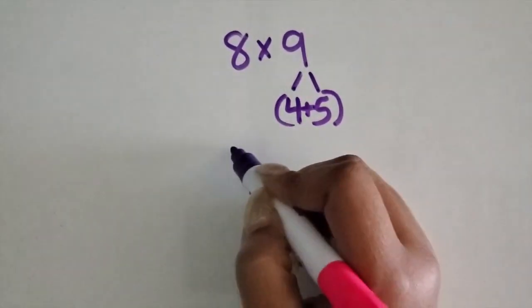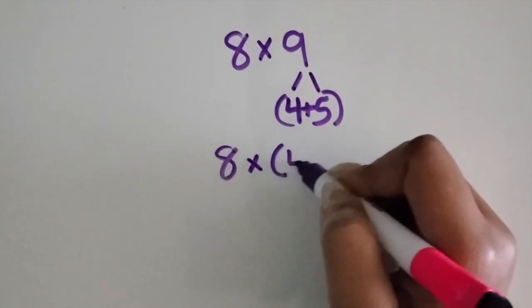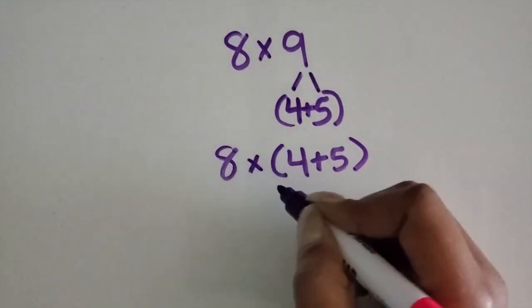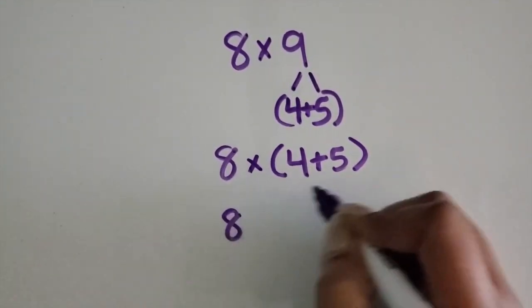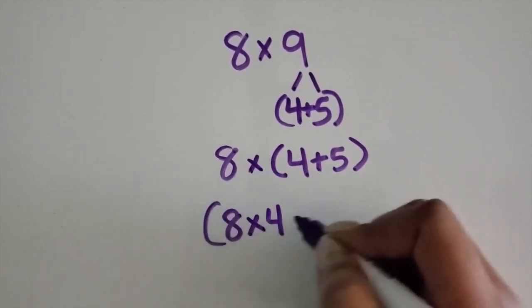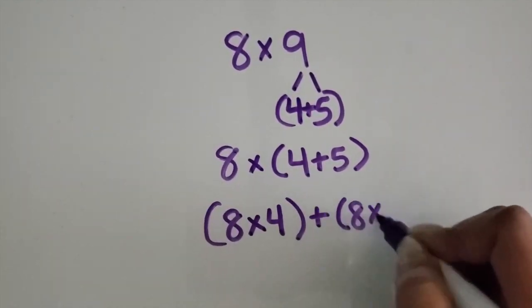So I'm going to keep the 8, that first factor, and then multiply it times 4 plus 5, which has a value of 9. Now I'm going to separate those smaller factors to multiply times 8, and then I'm going to add it with 8 times 5.